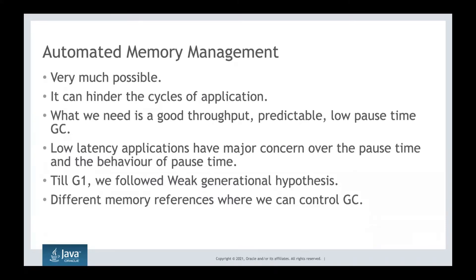We are greedy and we need everything good, but everything cannot be good. What we need is good throughput, good predictability, and very low pause time. We want the application to perform nicely and predictably. Predictability is one of the highest demanding factors in the market — there can be a pause, but it should be perfectly bounded, like never exceeding five or six milliseconds.